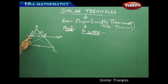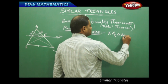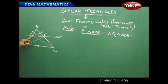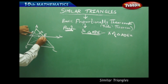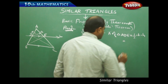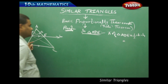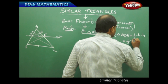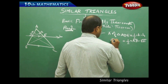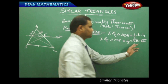In triangle ADE, I want to find the area of triangle ADE. Area of a triangle is half times base times height. If I take the base as AD, then the perpendicular height is EF. Therefore, area of triangle ADE equals half times AD times EF.